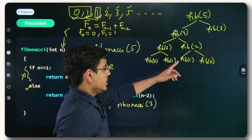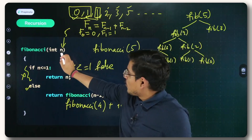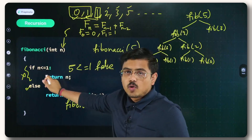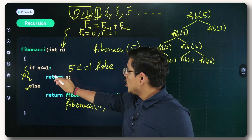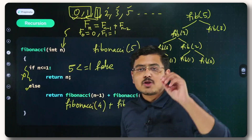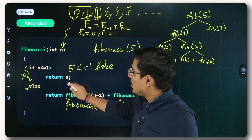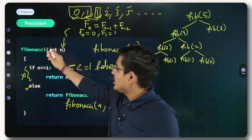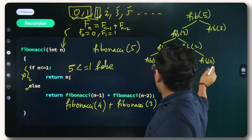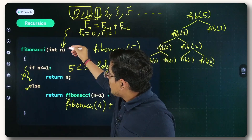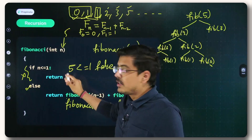As soon as we encounter Fib(1), since 1 is less than or equal to 1, the condition is true and it returns N, which is 1. As soon as you reach Fib(0), since 0 is less than 1, that if block executes and returns 0. So this base case executes whenever Fib(1) or Fib(0) is called.